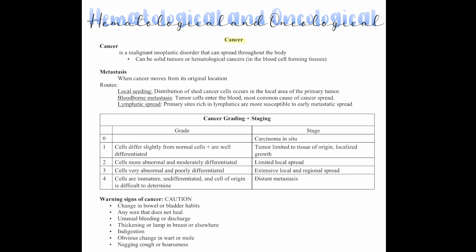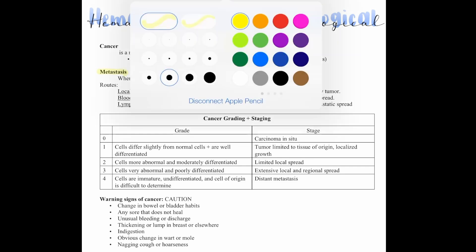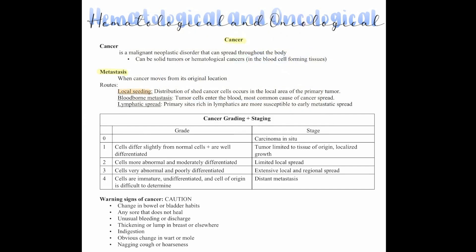Metastases is when cancer moves from its original location to other locations, and it can do this in various ways. First, it can do this by local seeding, which is distribution of shedding cancer cells, and it occurs in the local area of the primary tumor. It can use blood-borne metastases, where the tumor cells enter the blood — this is the most common cause of cancer spread — or lymphatic spread, where the primary sites rich in lymphatics are more susceptible to early metastatic spread.